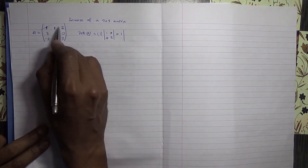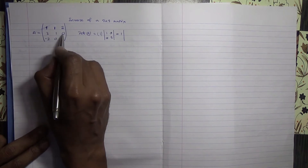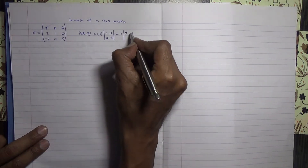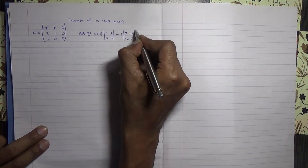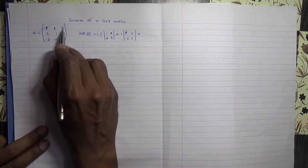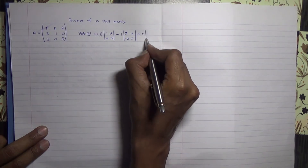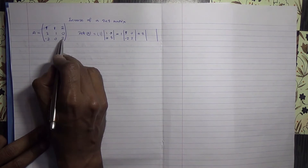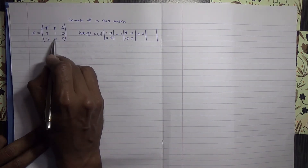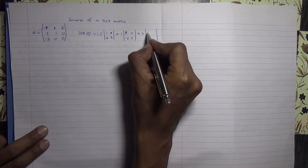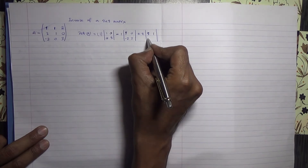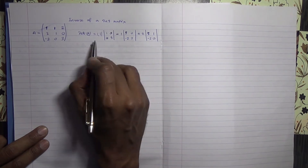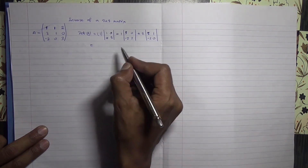If you take this column and this row, you get a matrix 3, 0, minus 2, 3. So you've got 3, 0, minus 2, 3. Then you've got plus 2, which is for this matrix here. If you take the row and the column, you get a matrix 3, 0, 1, minus 2. So you've got 3, 1, minus 2, 0. And then you find the determinant of each of these matrices, and you sum and subtract them.